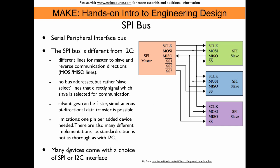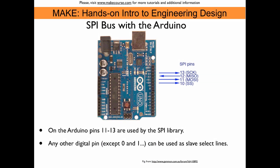The disadvantage is that we have many more lines on the bus compared to I2C. It's interesting to note that many devices come with a choice of SPI or I2C interface, sometimes even on the same chip. The SPI library that comes with the Arduino uses pins 13, 12, and 11 for the data lines: clock on 13, Master In Slave Out on 12, and Master Out Slave In on 11. Pin 10 is often used as the slave select pin, though any digital pin can serve that role.